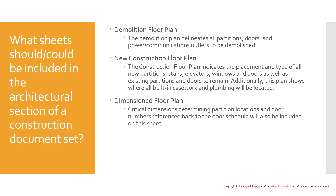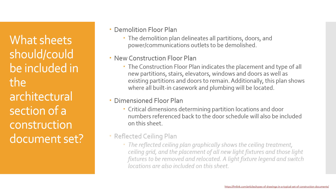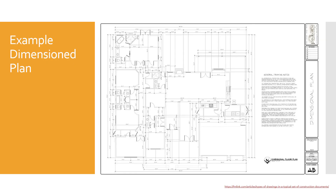A reflected ceiling plan graphically shows the ceiling treatments, ceiling grids for acoustical ceiling tiles, as well as the placement of all new light fixtures and those that will be removed and relocated. A light fixture legend and switch locations are typically included, though sometimes they're on separate sheets. Here's an example of a basic dimension plan — large so you can read the dimensions, with exterior and interior dimensions, formatted onto a title block with notes and drawing titles.